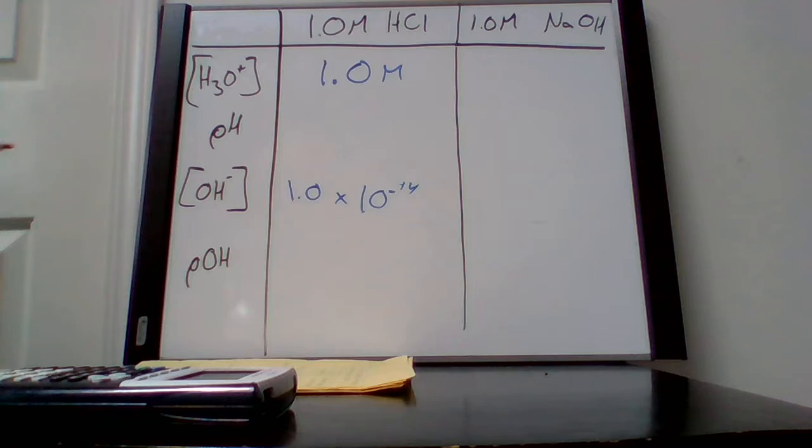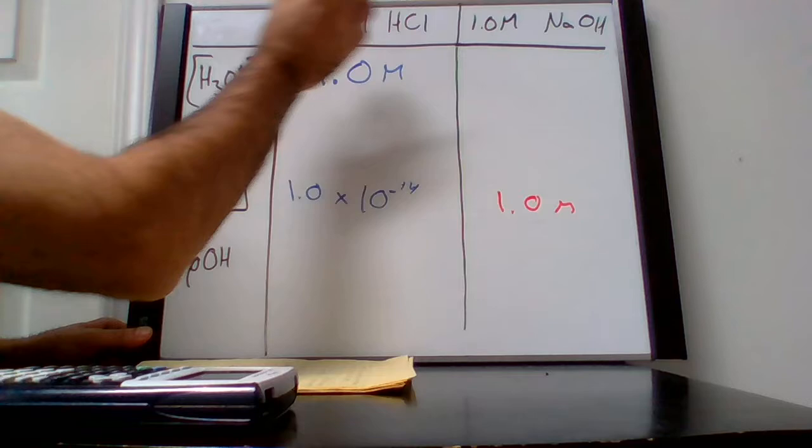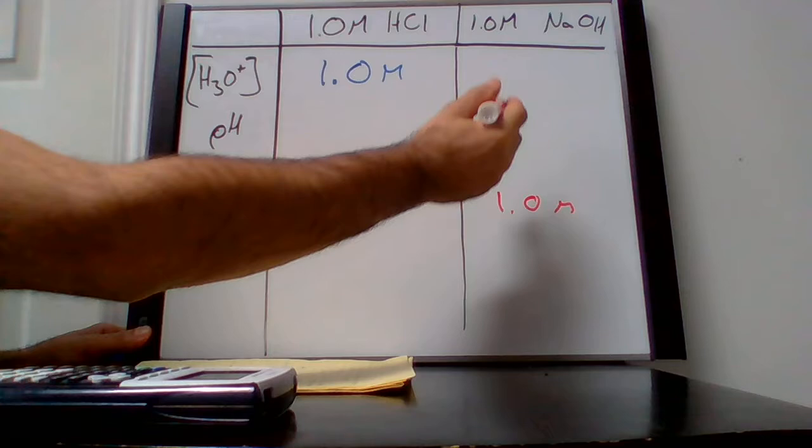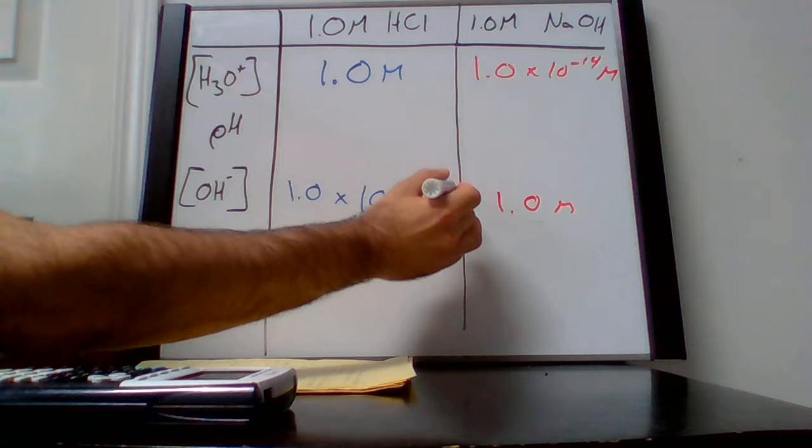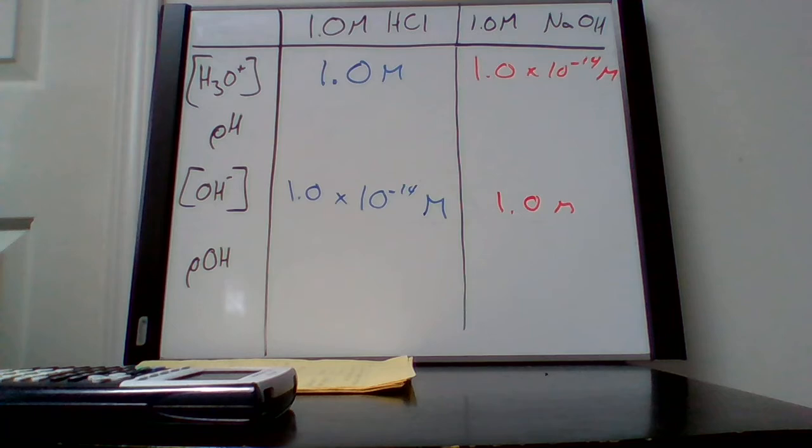Similarly for NaOH, we have 1.0 molar because it's fully dissociated. Using the same process, Kw divided by the OH- concentration gives our H3O+. That part is review from previous lessons.